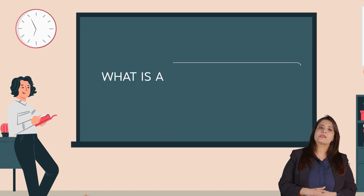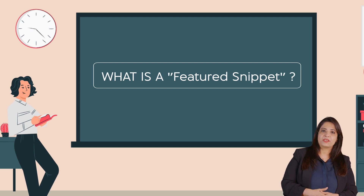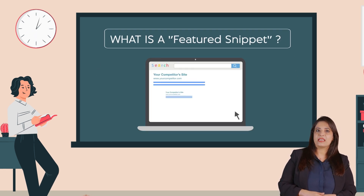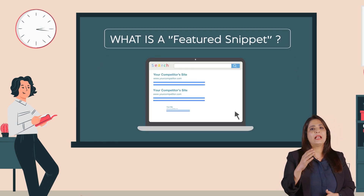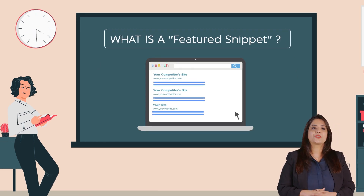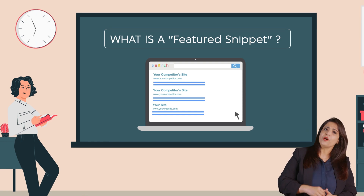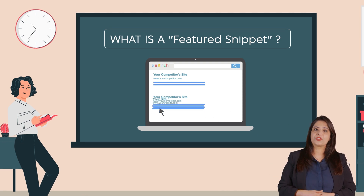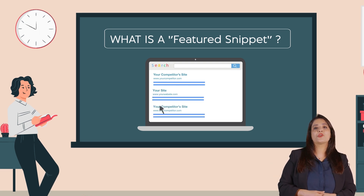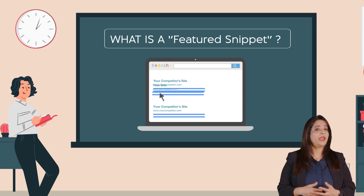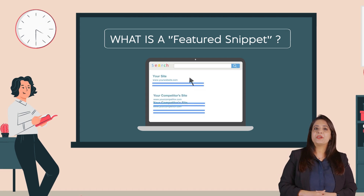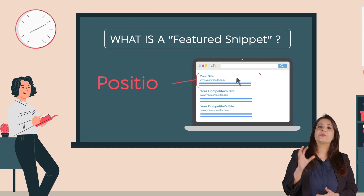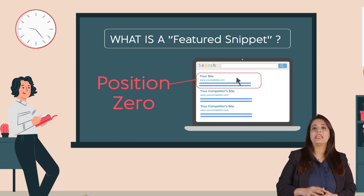Let us discuss the featured snippet. When you optimize your web content with the help of structured data, your website can appear above the first position based on the search queries. As it appears at the top of the page, it can be called position zero.